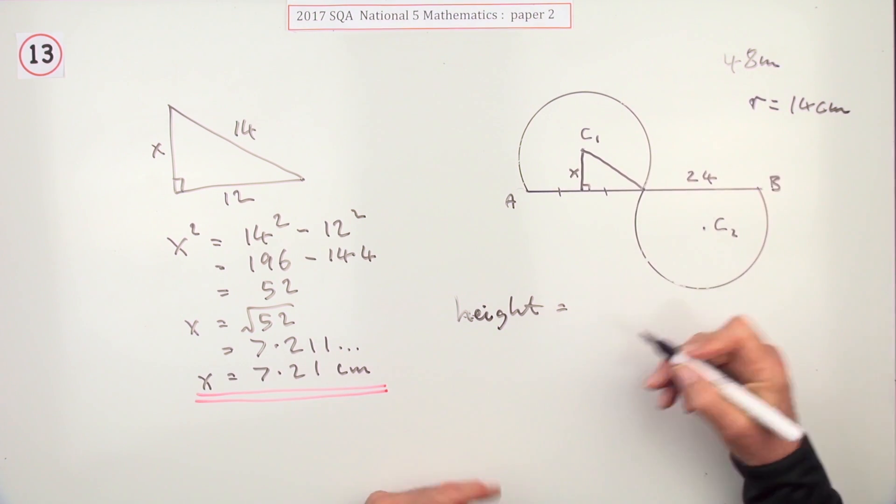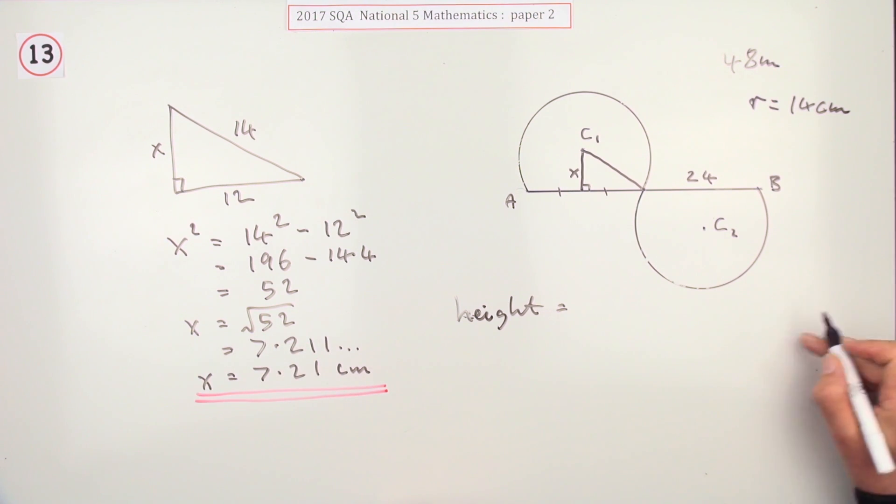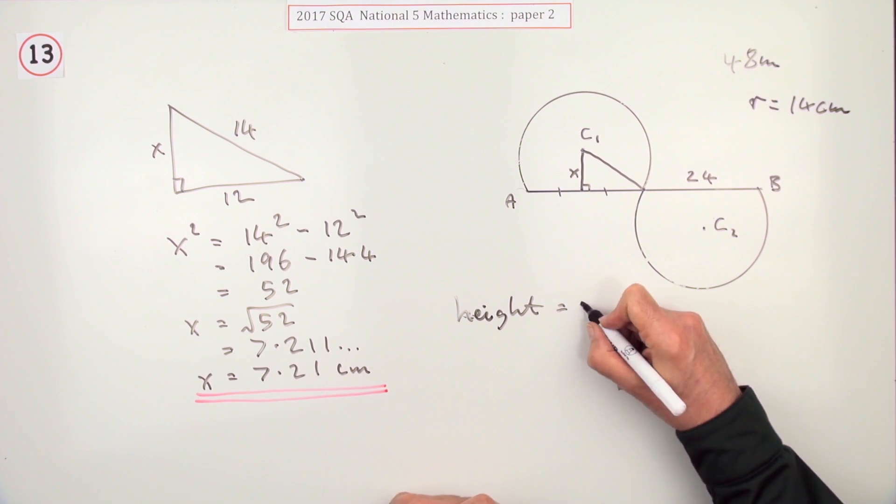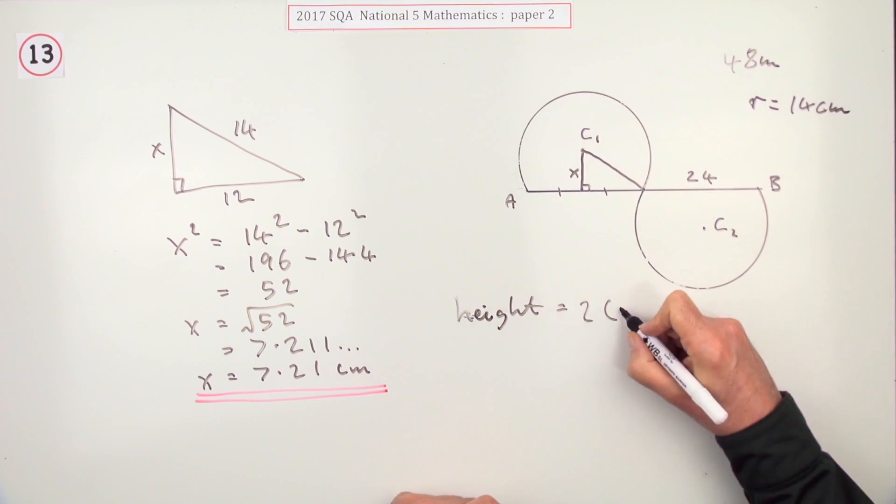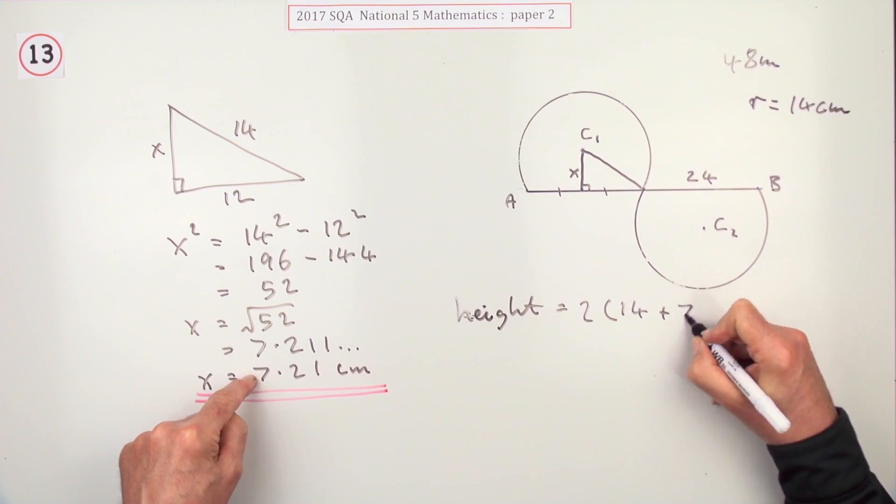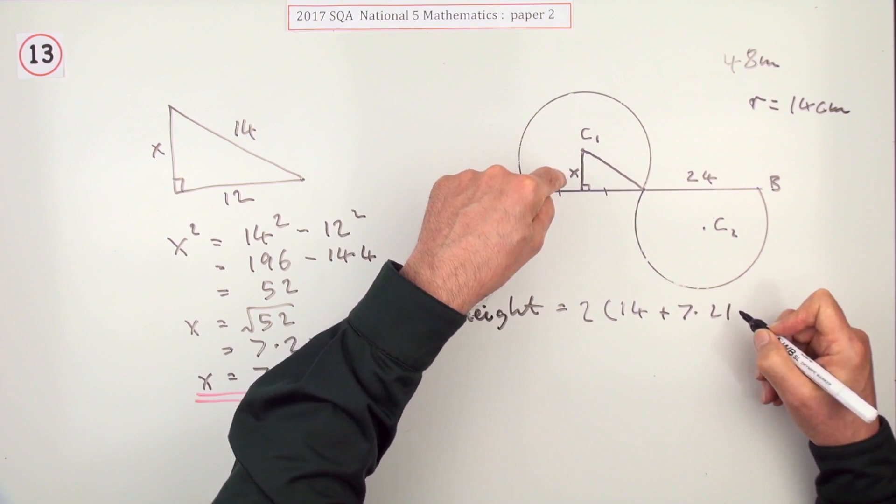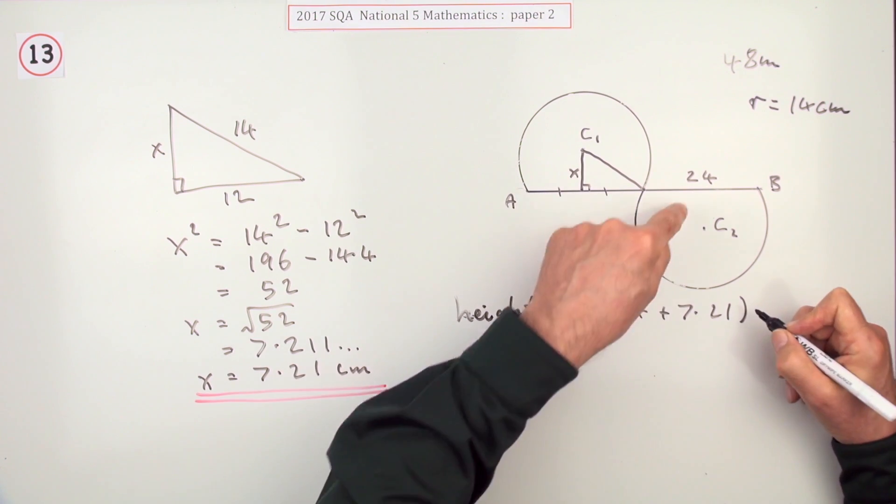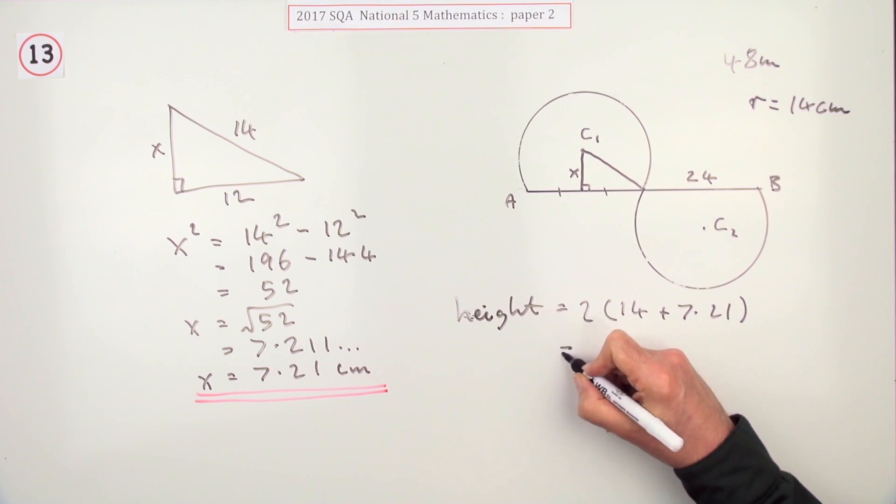You can write all four numbers down or you can just put two of them down and double it. I'll just say double what this would be: that would have been the 14 for the radius, the 7.21 for the height, the same again. So that's why I've got the two times in front of it, or you could get all four bits out.